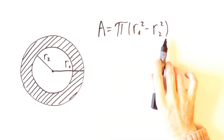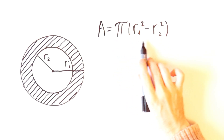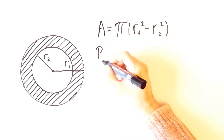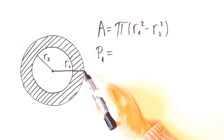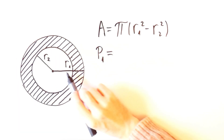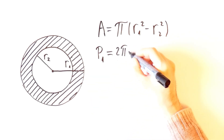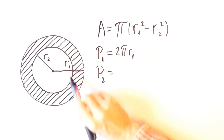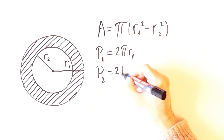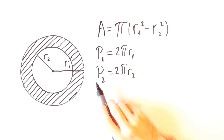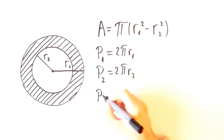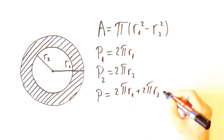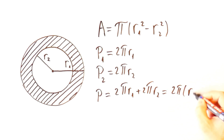Here again we have the formula for the area of an annulus, but we can show another perspective. First we need the perimeters. The outer perimeter P1 is the circumference of the outer circle, equal to 2π·R1. The inner perimeter P2 is the circumference of the inner circle, equal to 2π·R2. The total perimeter is the sum of the two: 2π·R1 plus 2π·R2, which equals 2π times (R1 plus R2).